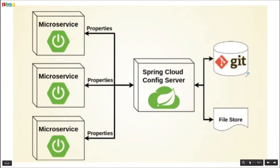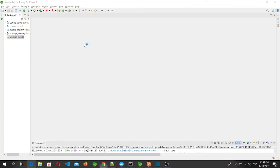In the last video we implemented a Git-backed Spring Cloud Config Server and added student service configuration files for default, development, and production environments. In this video we are going to add Spring Cloud Config Client to our microservices, specifically the student microservice which we created in video 3.